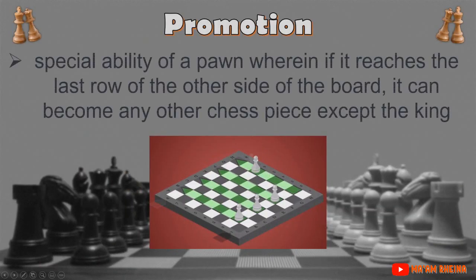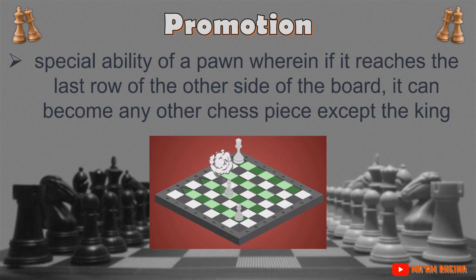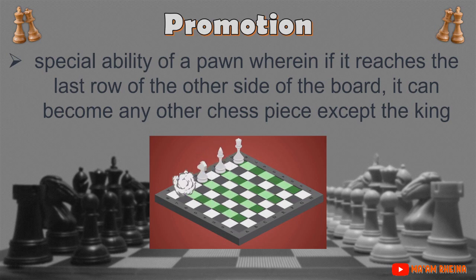Promotion is a special ability of a pawn wherein if it reaches the last row on the other side of the board, it can become any other chess piece except the king. If the pawn reaches the far side of the board, it must immediately be promoted to any other piece except the king. The best way is to promote your pawn to the queen.